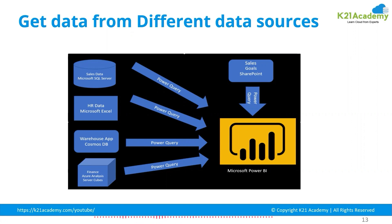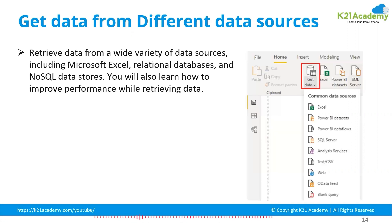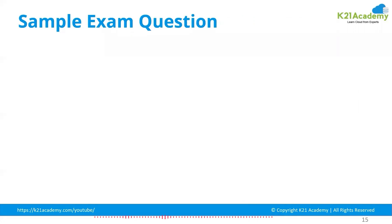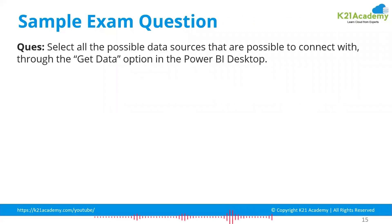After learning about getting data from different sources, here's a sample question: 'Select all the possible data sources that are possible to connect with through the Get Data option in Power BI Desktop.' The answer options include: Power BI Dataflows; CSV and Excel files stored on the machine; on-premises database; or Azure database via Direct Query.